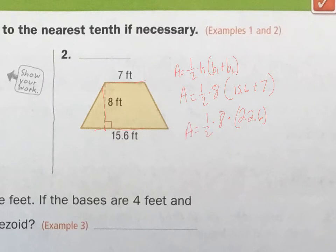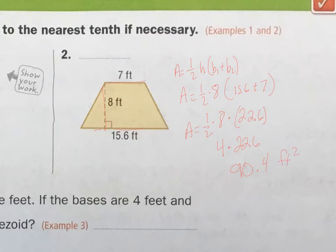The rest is just multiplication, so I'll do it in order. One-half times 8 is 4, times 22.6. And 4 times 22.6 is 90.4. We're talking about feet, and it's the area so it's squared — 90.4 feet squared.